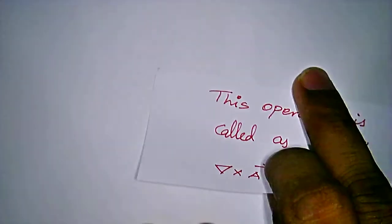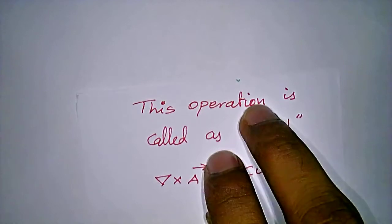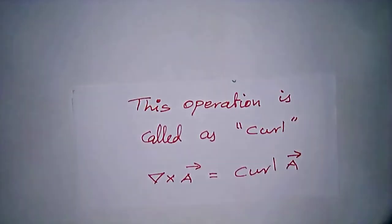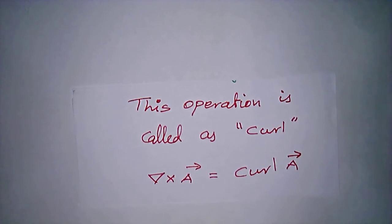So this operation is called the curl, written as del cross A vector.